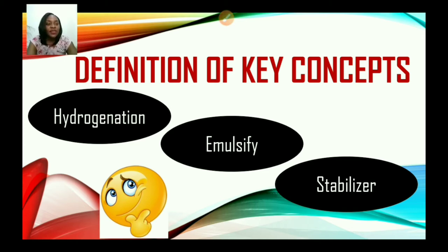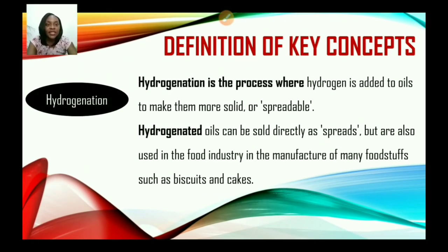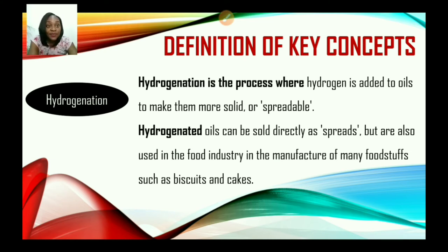We'll be looking at three key terms: hydrogenation, emulsify, and stabilizer. Hydrogenation is the process where hydrogen is added to oils to make them more solid or spreadable. Hydrogenated oils can be sold directly as spreads but are also used in the food industry in the manufacture of many foodstuffs such as biscuits and cakes.